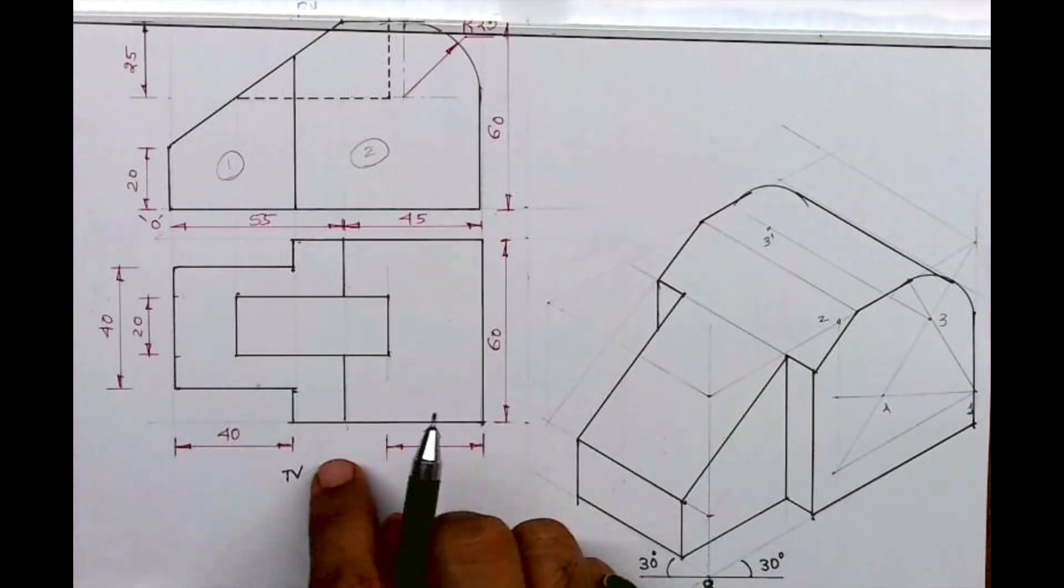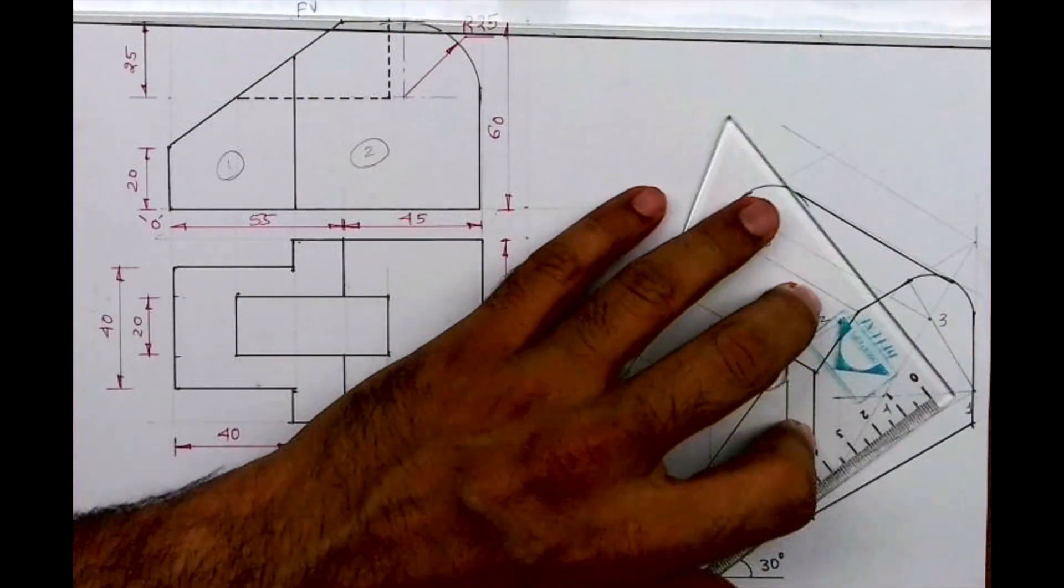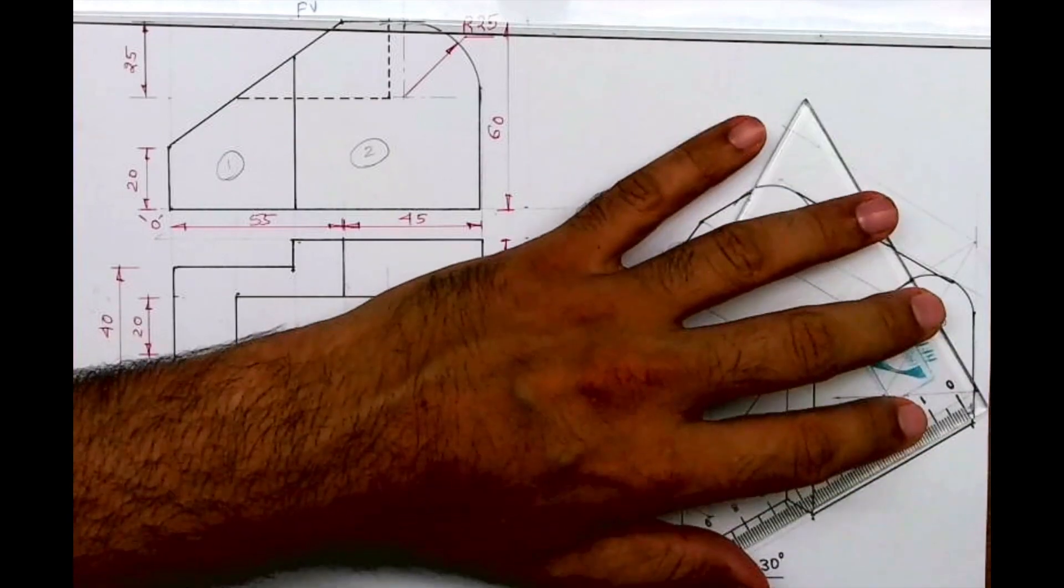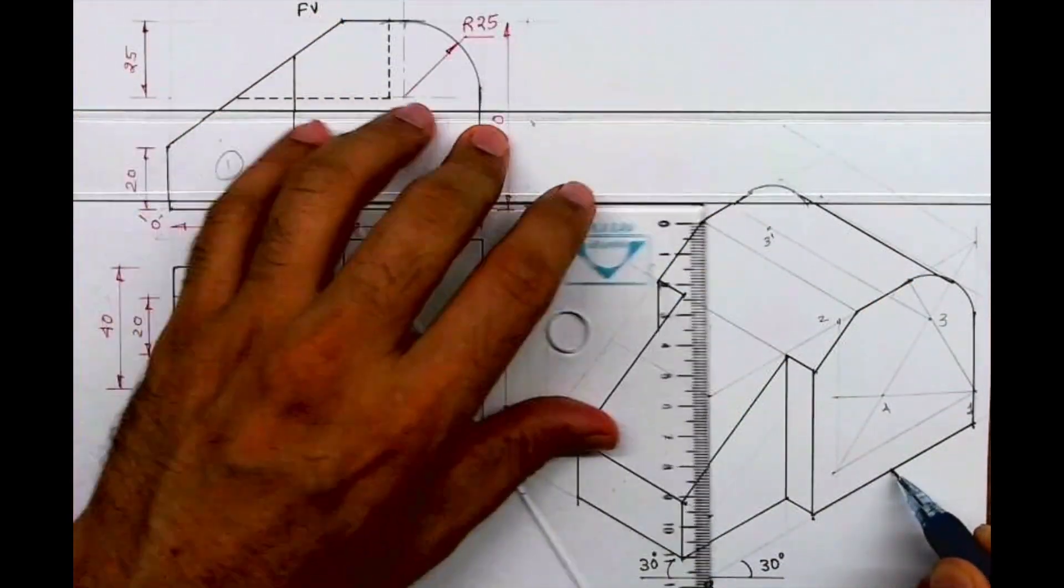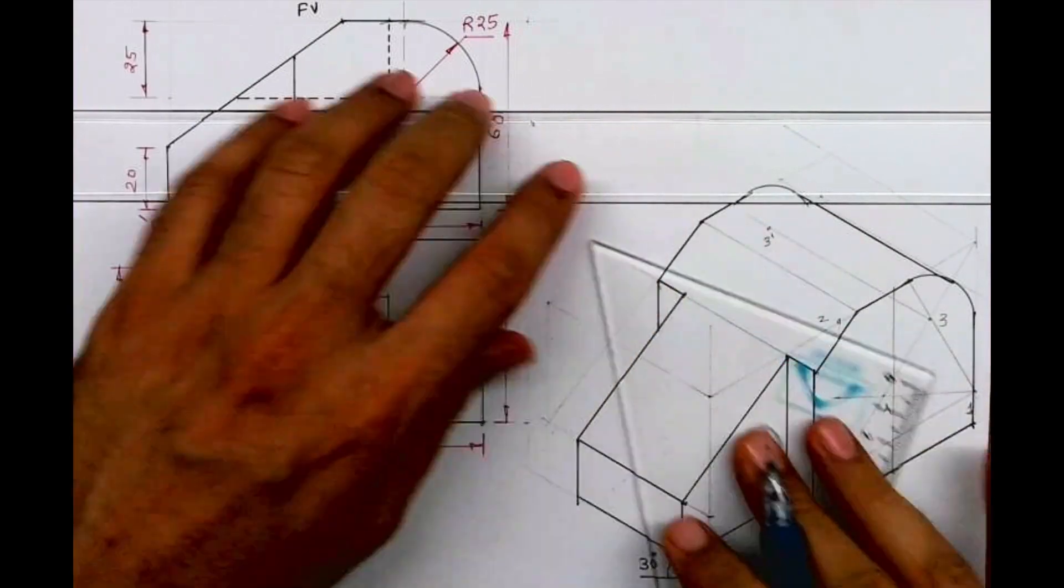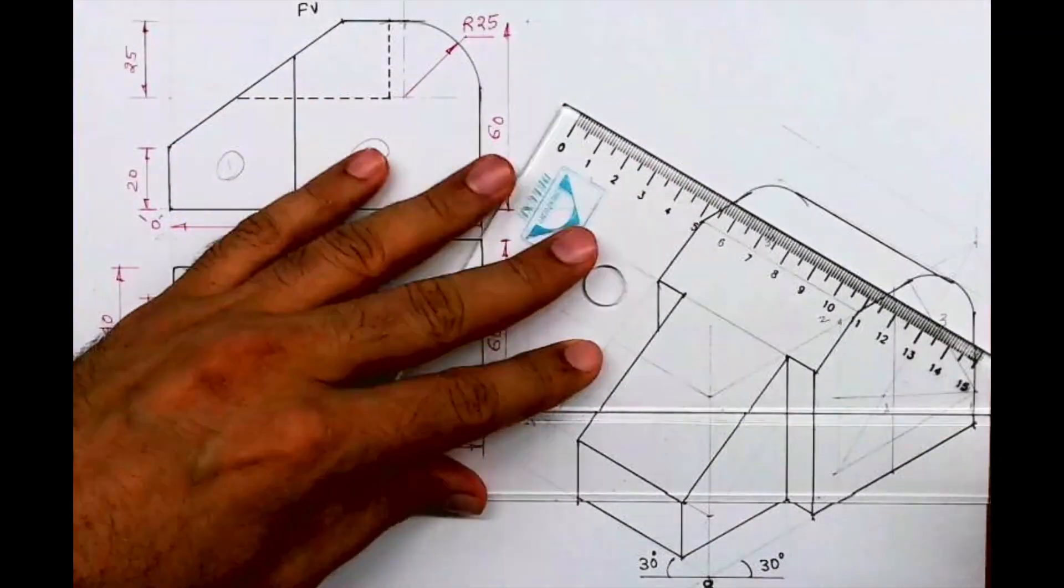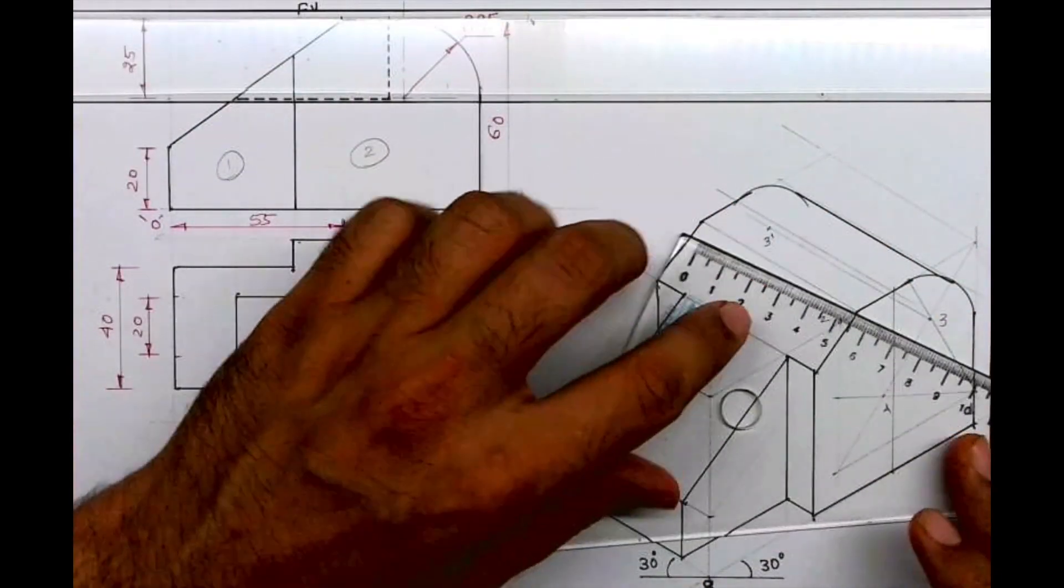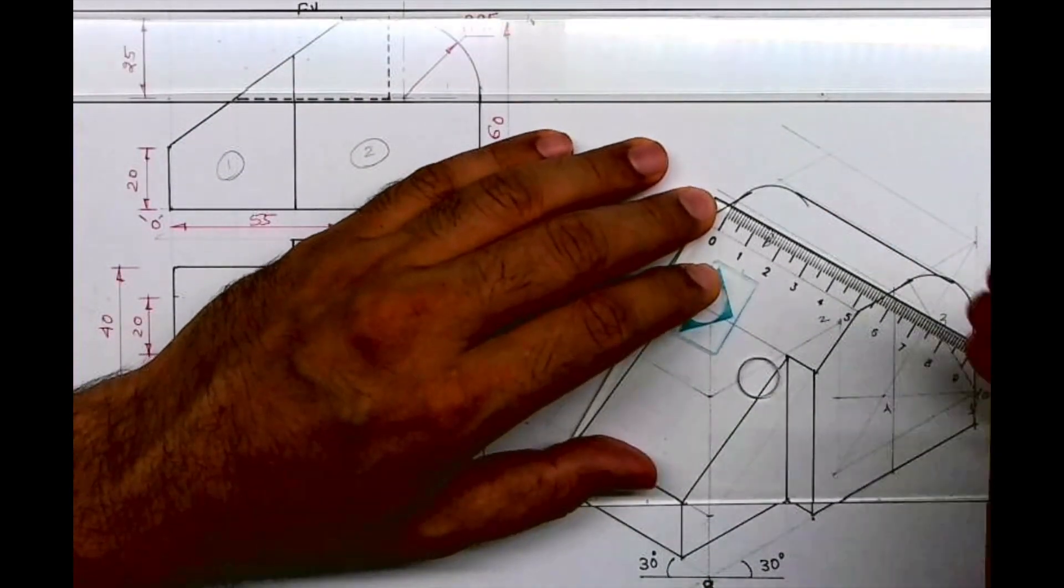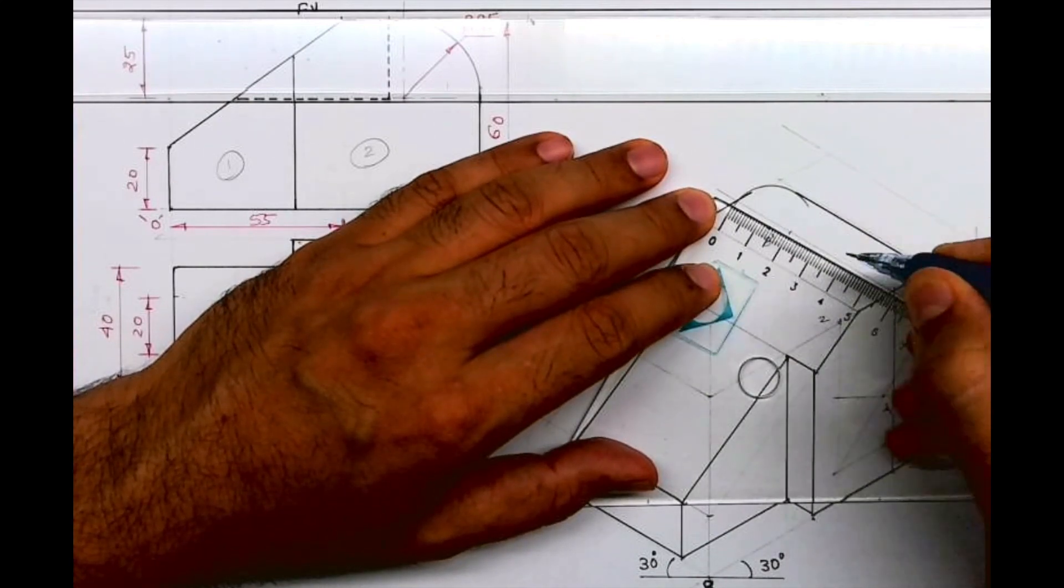This slot is over here and it is 30 from here. So I can take 30 from here, I'll go up, and I will draw a line like this. Now here they have given it is 60, so 20, 20, 20, 20. So we can mark the distance.